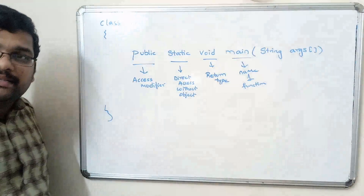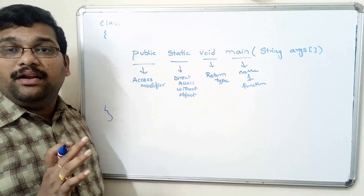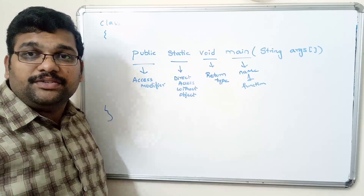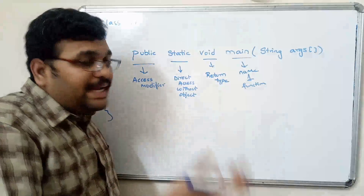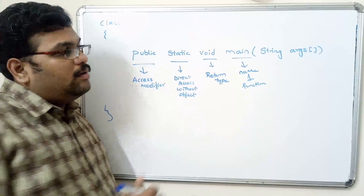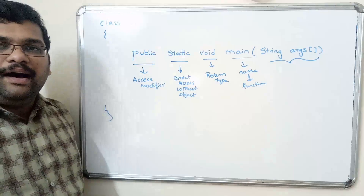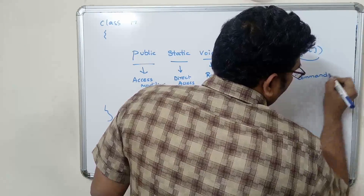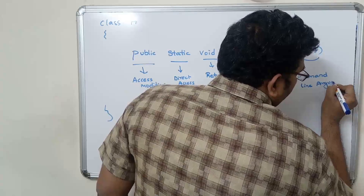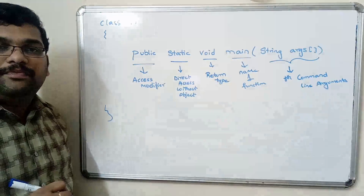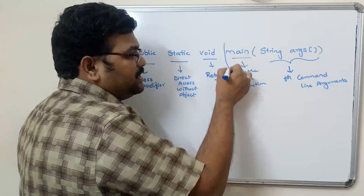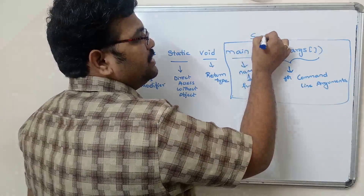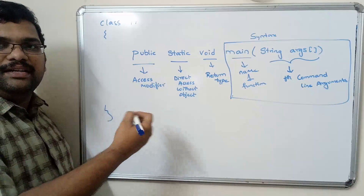What is the importance of String args? Java programming supports command line arguments — we can also give inputs from the command line, which we have seen in previous sessions. In order to take inputs from the command prompt, we use this syntax: String args. This is for command line arguments. Our compiler will search for the syntax main String args — this is the only syntax recognized by the compiler and we have to write it.